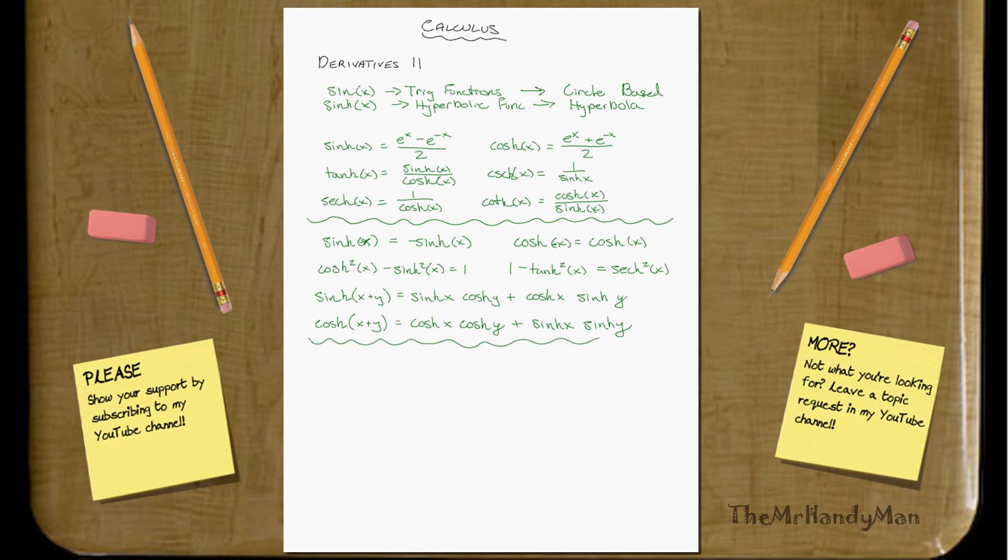So, let's rock over to the derivatives of them. And basically, I'm just going to hit these up real quick so that we can get to some examples. d over dx of sinh x is going to equal, quite simply, cosh x.